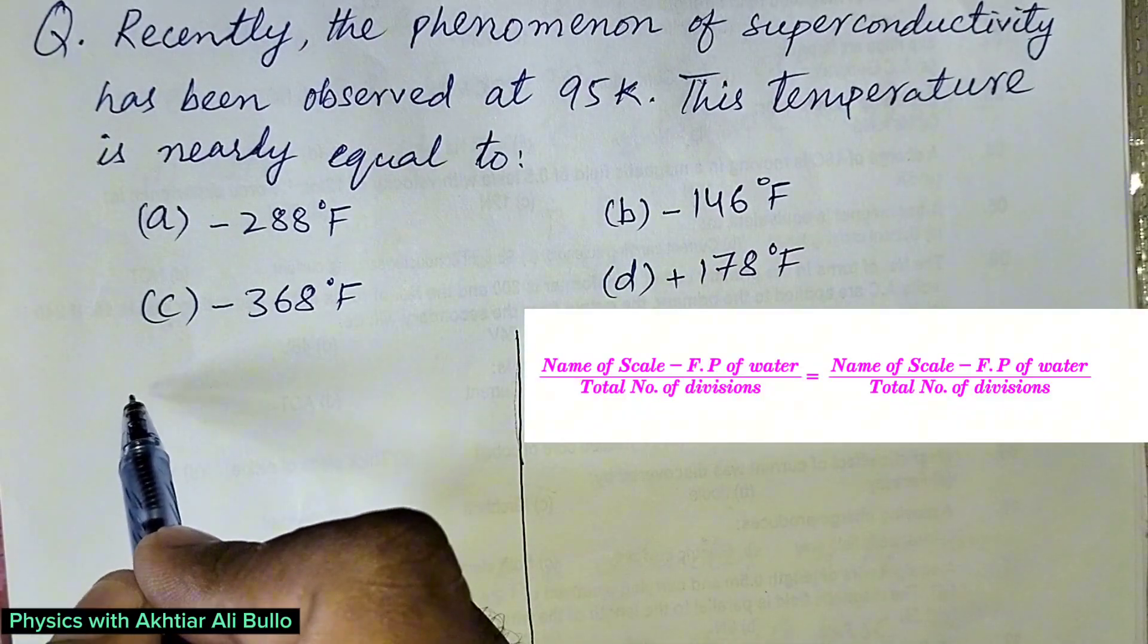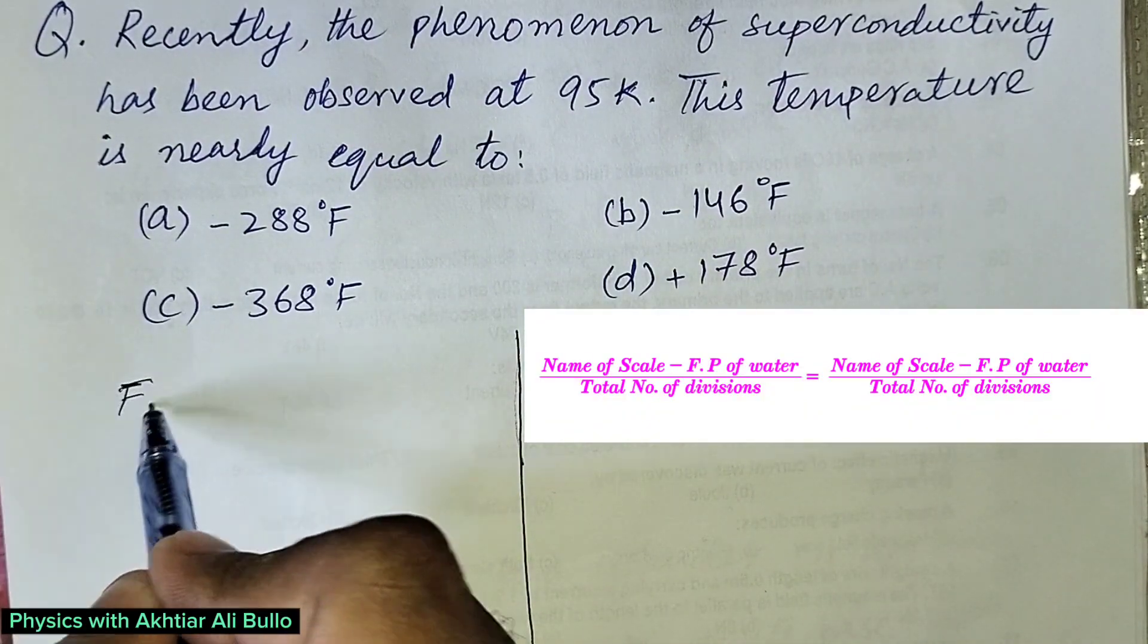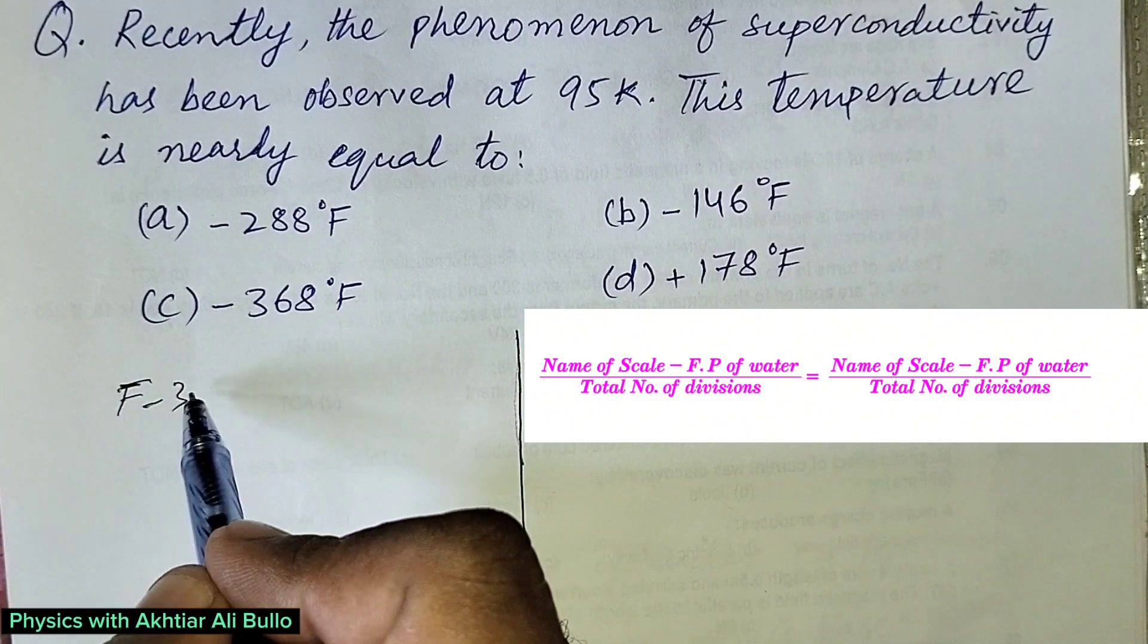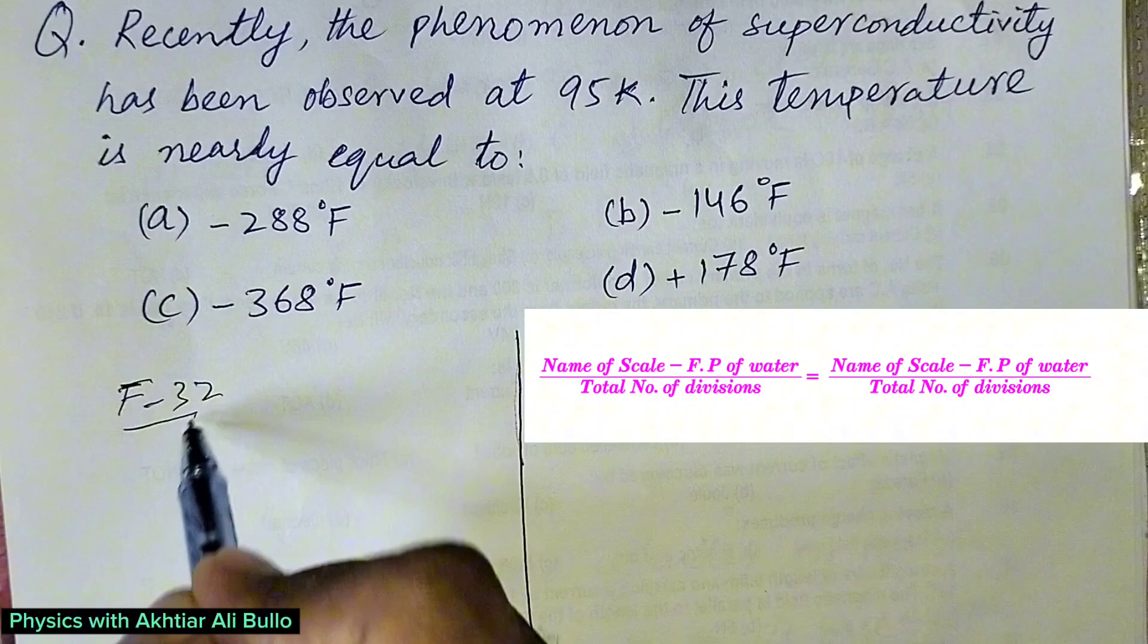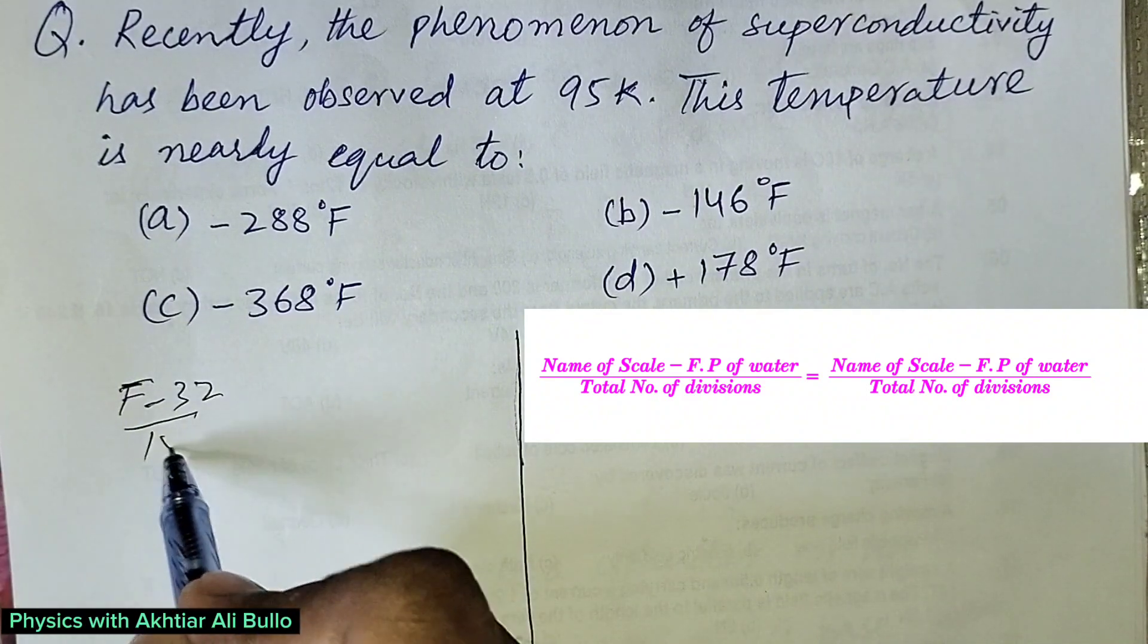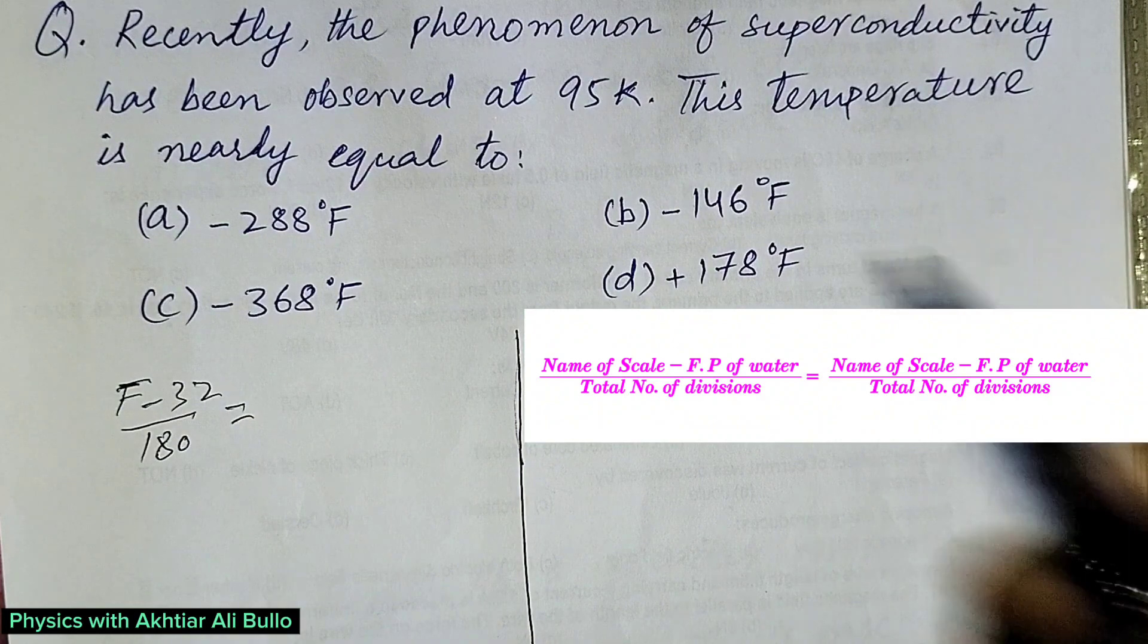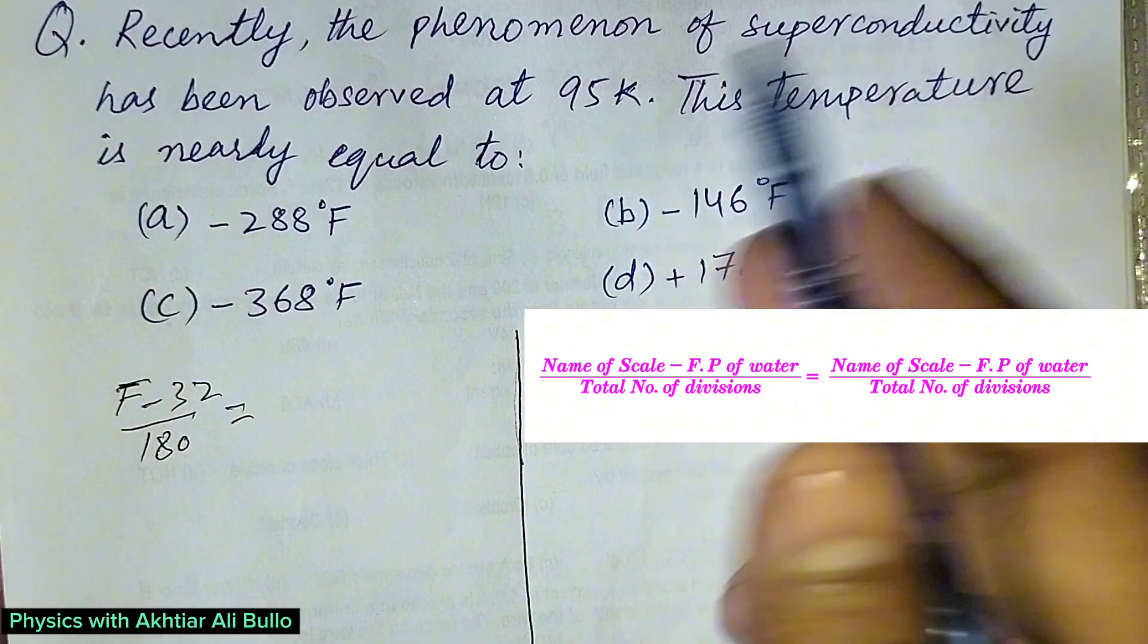So for the Fahrenheit scale: name of scale minus freezing point, which is F minus 32, divided by total number of divisions, which is 180, equals the obtained temperature in Kelvin.